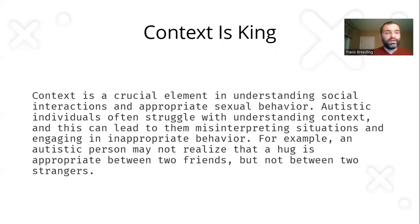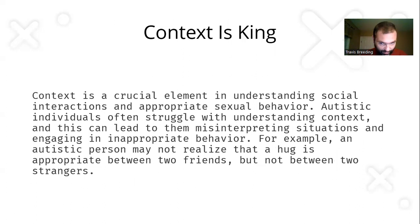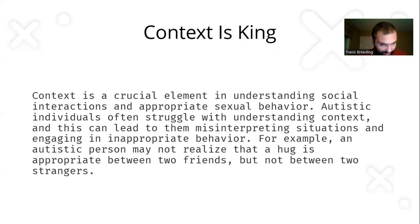Context is king. Context is a crucial element in understanding social interactions and appropriate sexual behavior. Autistic individuals often struggle with understanding context, and this can lead to misinterpreting situations and engaging in inappropriate behavior. For example, an autistic person may not realize that a hug is appropriate between two friends but not between two strangers.